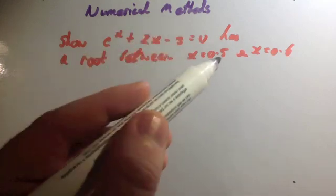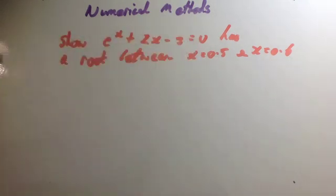One of them should be positive, one of them should be negative. That means that it will equal 0 in between those two values. Make sure your equation equals 0 first of all. If it's not equal to 0, bring it over to the other side so that you get it equal to 0. Then you put the values in.